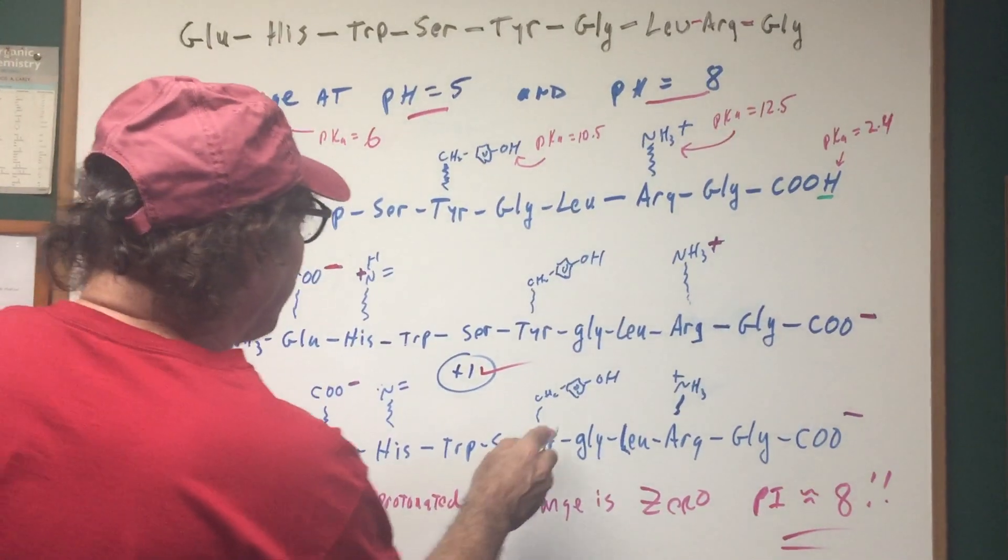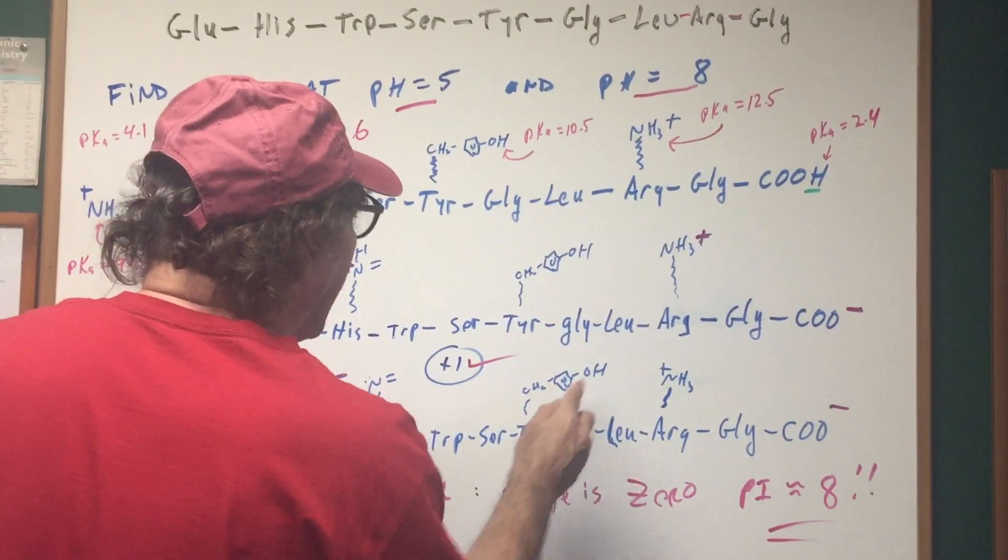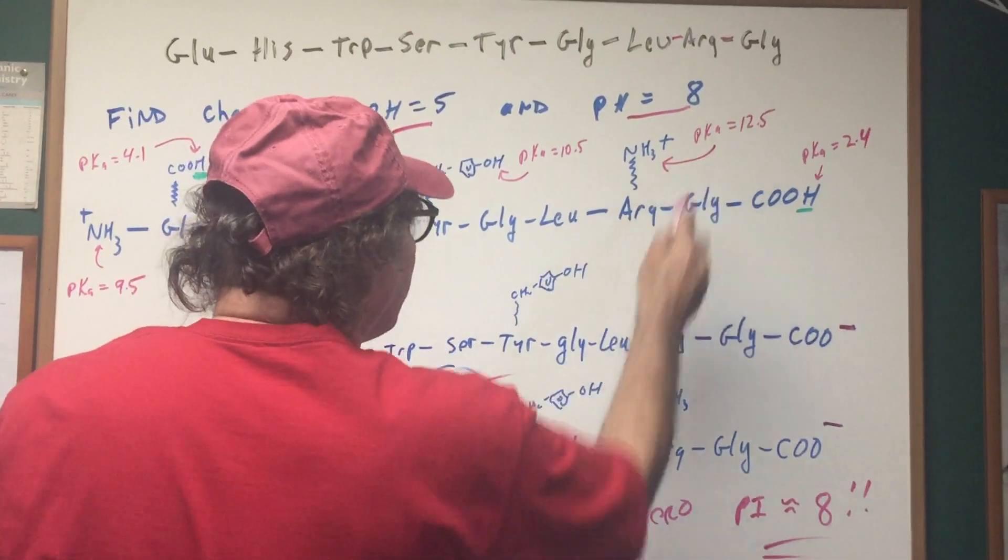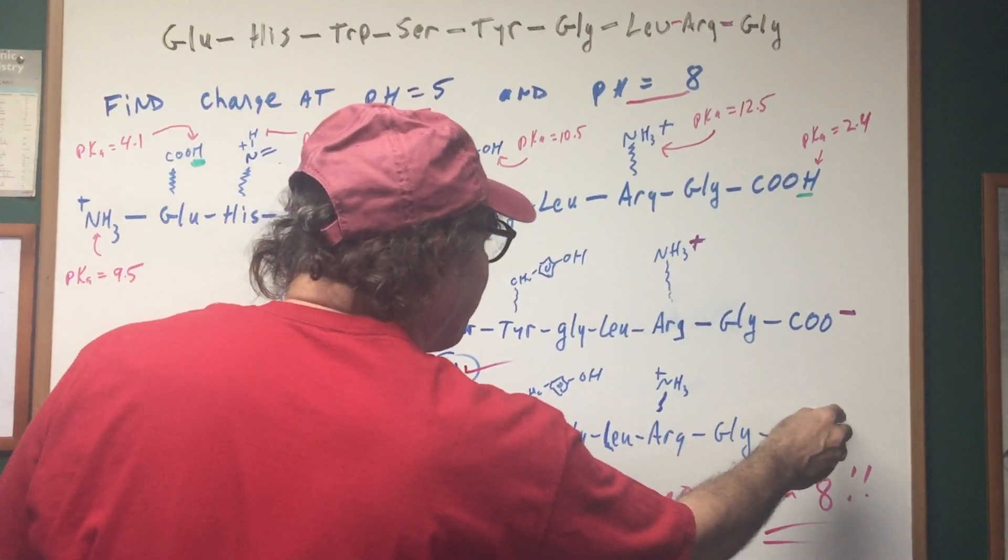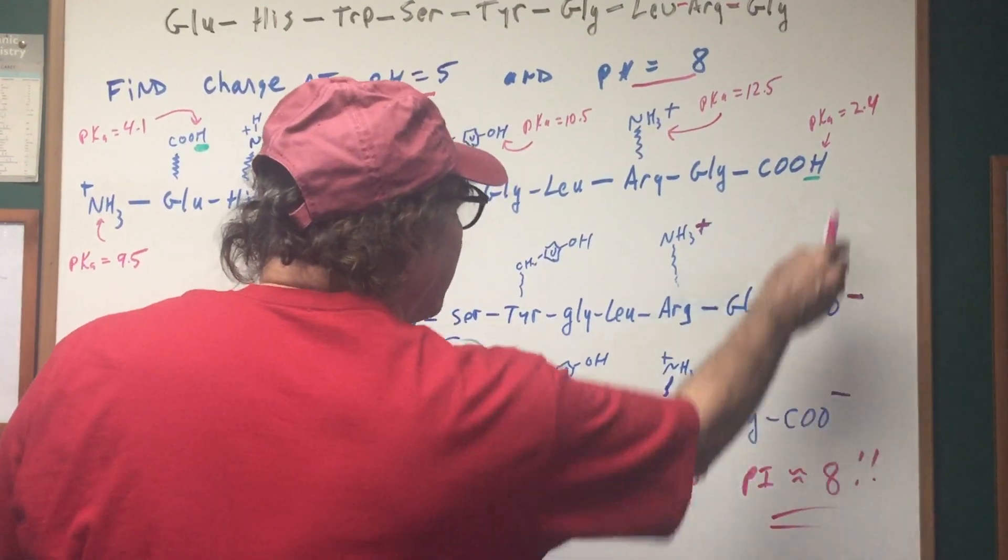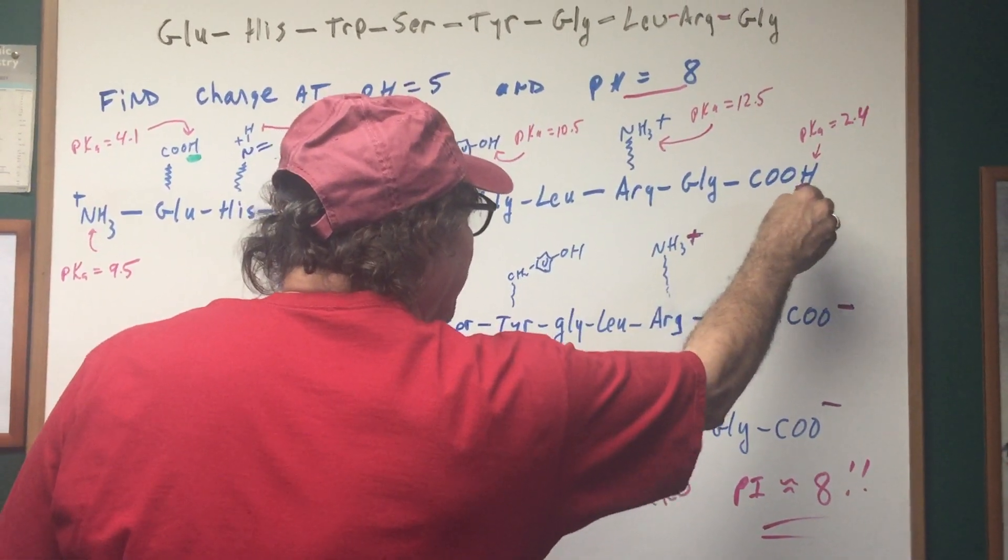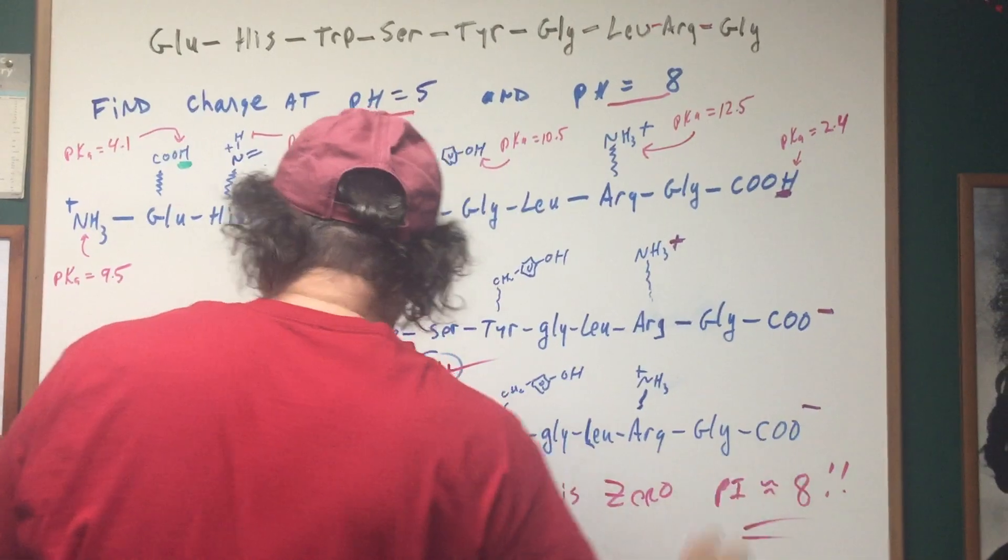Nothing is happening on the side chain of tyrosine till 10.5. So you keep that. Arginine, nothing happens there till 12.5. And then finally, this is long gone. This started deprotonating 50%, deprotonated at 2.4.